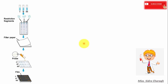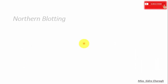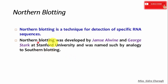In this lecture we will discuss Northern Blotting. Northern Blotting is a technique used for the detection of specific RNA sequences. It was first developed by James Irvine and George Stark at Stanford University, and was named by analogy to Southern Blotting.